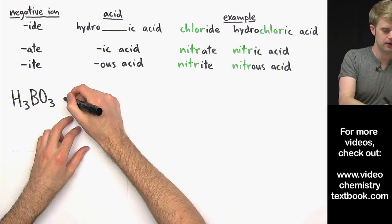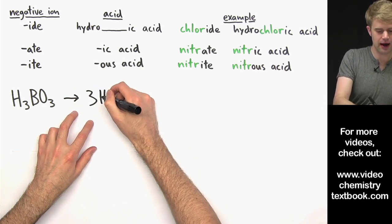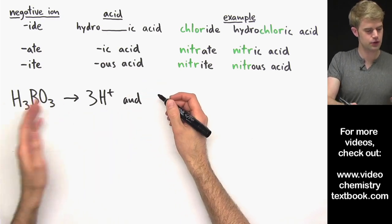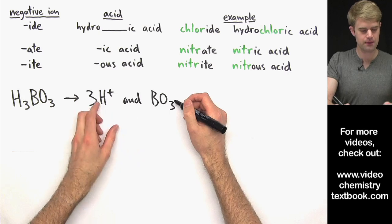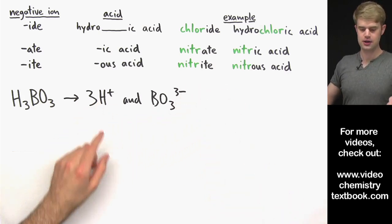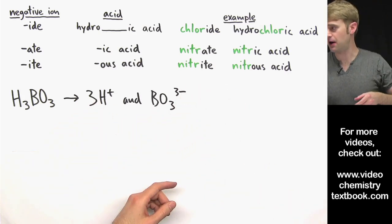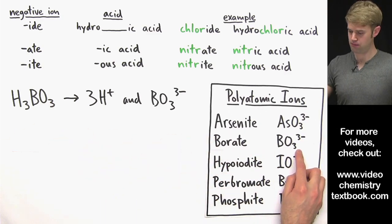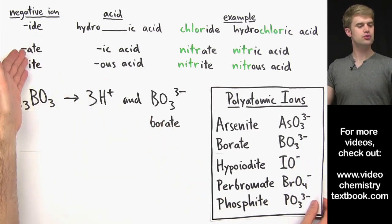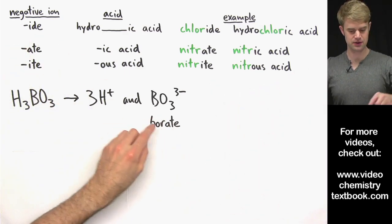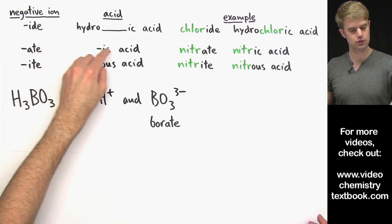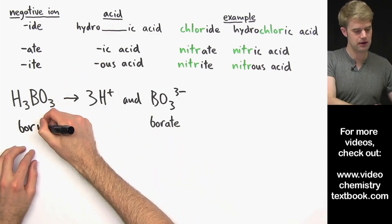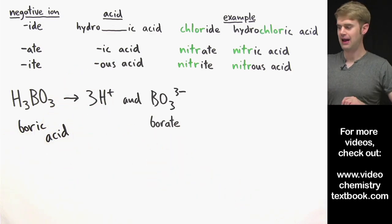H3BO3, let's break it apart, find out what this negative ion is. We have three H pluses from the H3. And the other part is going to be BO3 with a three minus charge to balance out the three H pluses. This is a polyatomic ion. What's its name? Its name is borate, BO3 three minus. So which of these rules are we going to use to name the acid that contains borate? It ends in A-T-E, so we'll use this one. We take off the A-T-E and we call it boric acid.